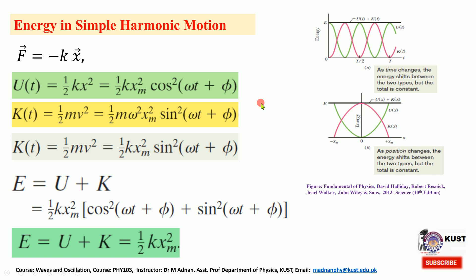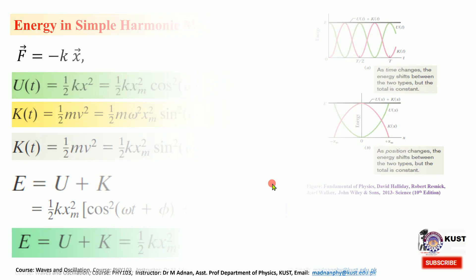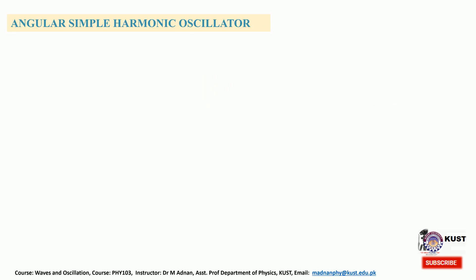So one can describe the harmonic oscillator using this energy mechanism: find the potential energy, find the kinetic energy, and the total energy is their sum. At any instant of time one can determine whether the energy is kinetic or potential. Now we will see some examples of the harmonic oscillator other than the mass-spring system.